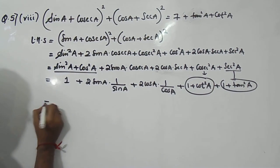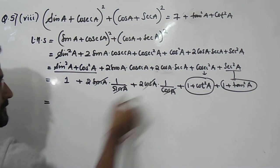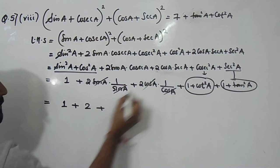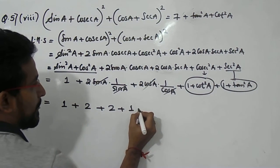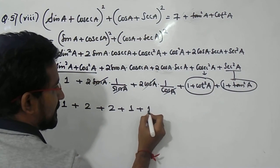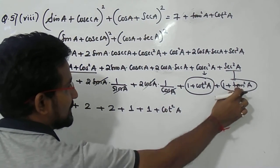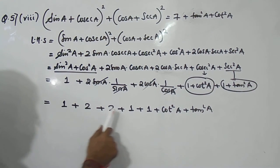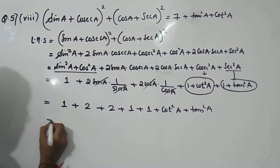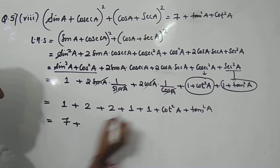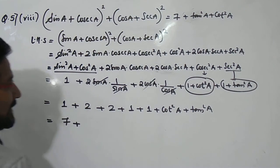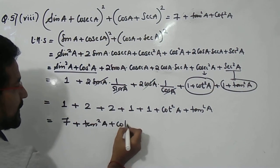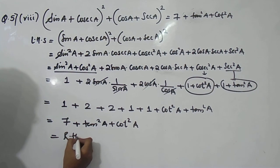Now the sin terms cancel each other, and the cos terms cancel each other. So what we get is: 1 + 2 + 2 + 1 + 1 + cot²a + tan²a. Adding all the constants: 1 + 2 + 2 + 1 + 1 = 7. So we get 7 + cot²a + tan²a, which is nothing but tan²a + cot²a + 7, and that equals the RHS.